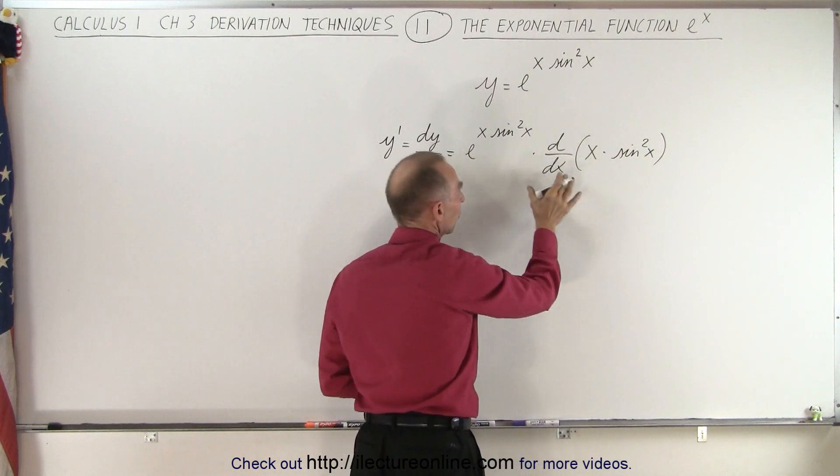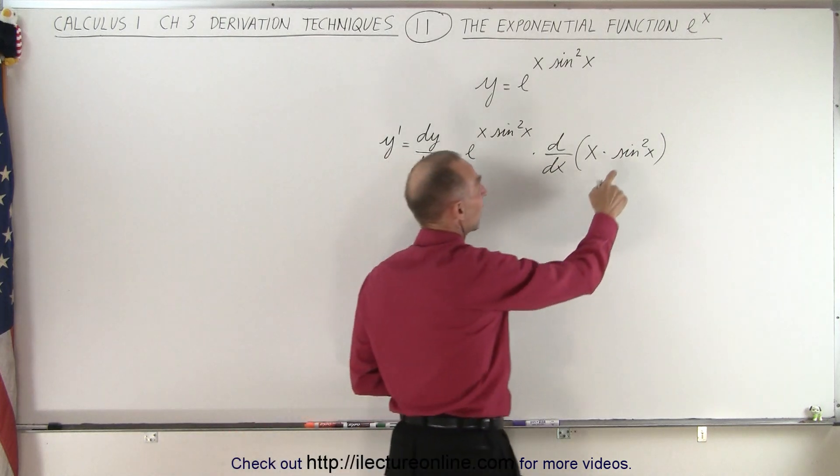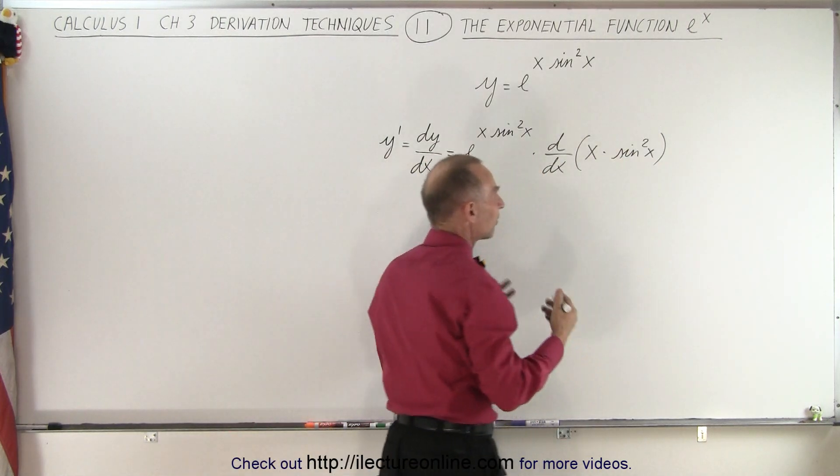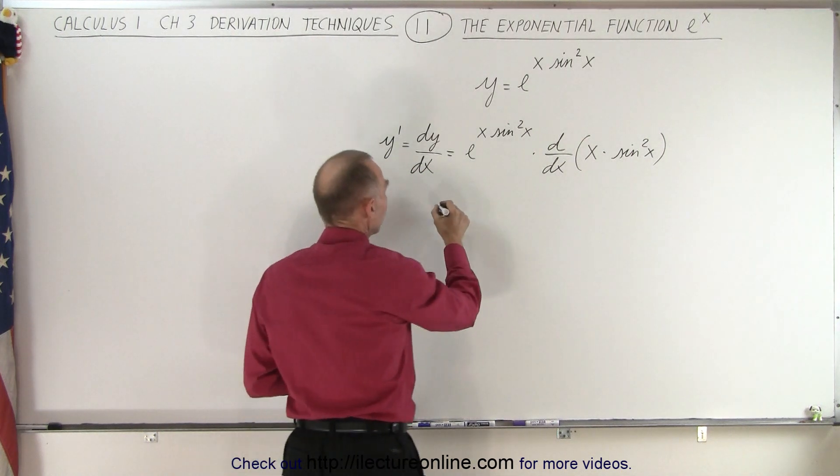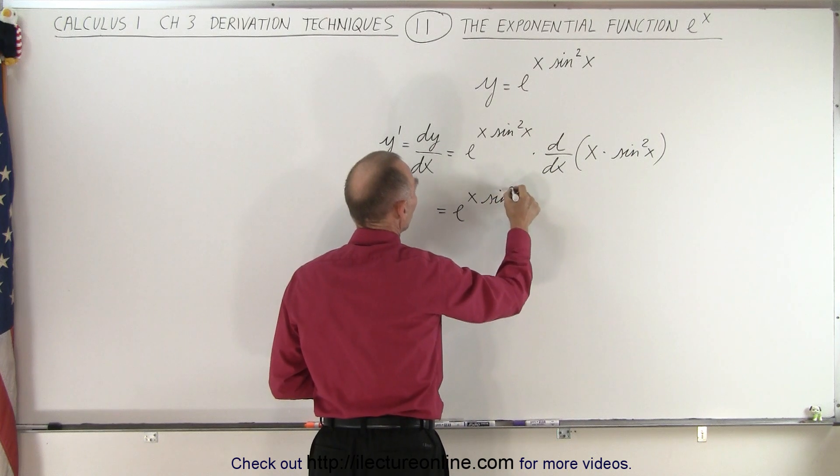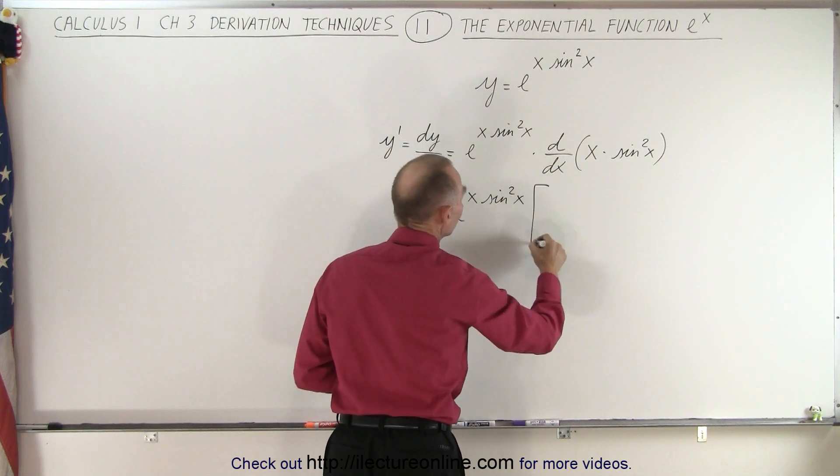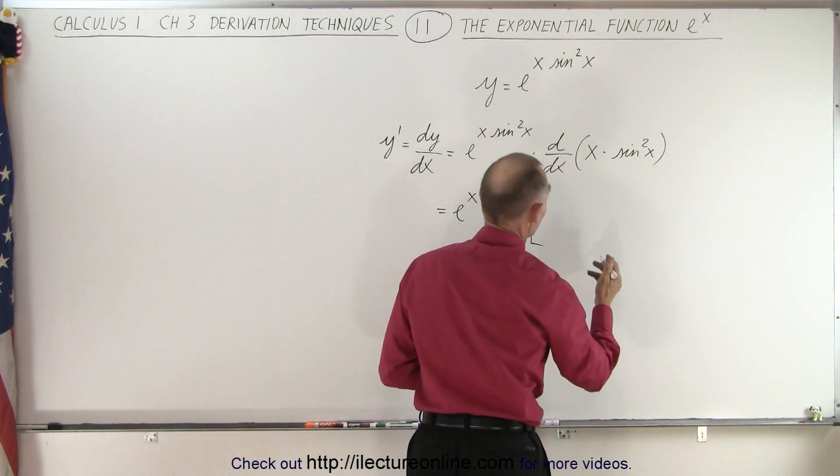So now notice that when we take the derivative of the exponent, we have a product, and then we also have something squared. So we have to deal with that. So how do we do that? Well, this is equal to e to the x times the sine square of x times—we have a product, so here we use the product rule.